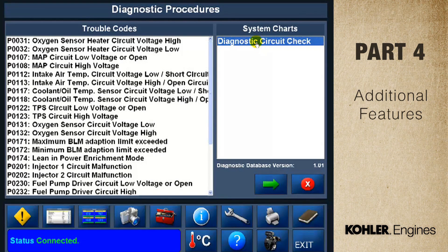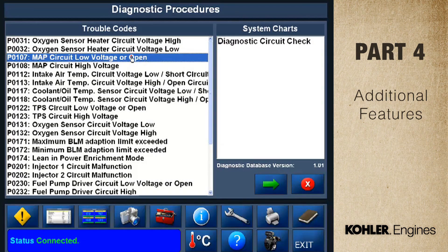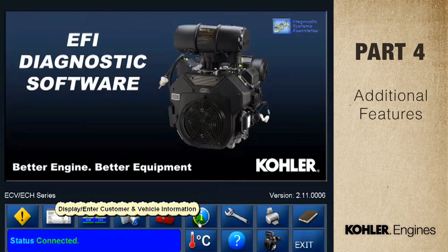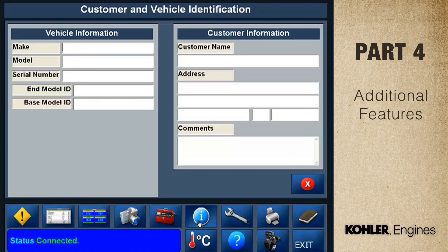Select a code and click the green arrow or double-click on the code. The other option, feature configuration registration, shows the software license ID number. Now we'll look at the customer vehicle information screen. This screen lets you enter information about the vehicle and owner and print it for your customer files.